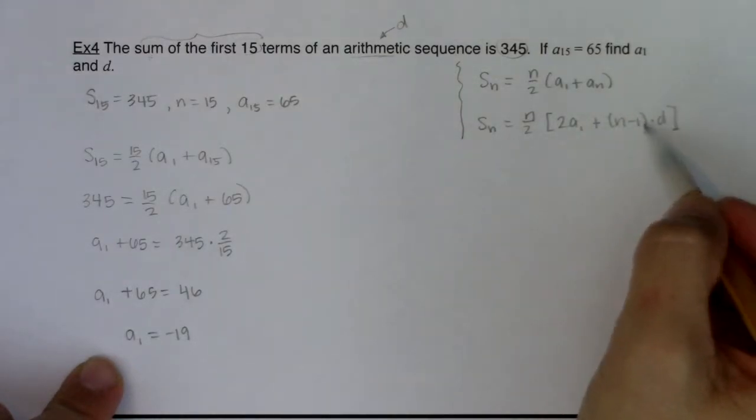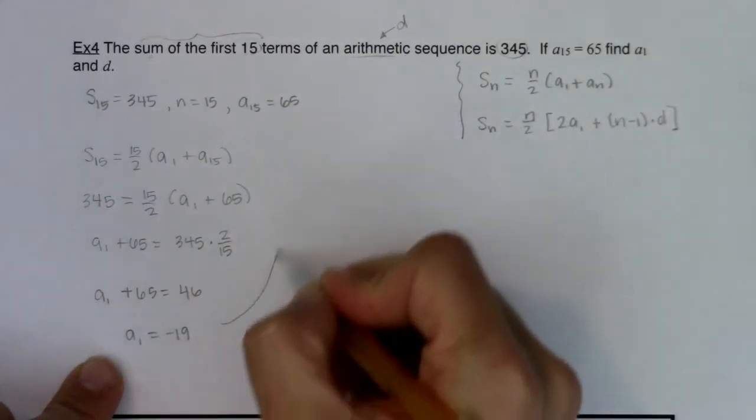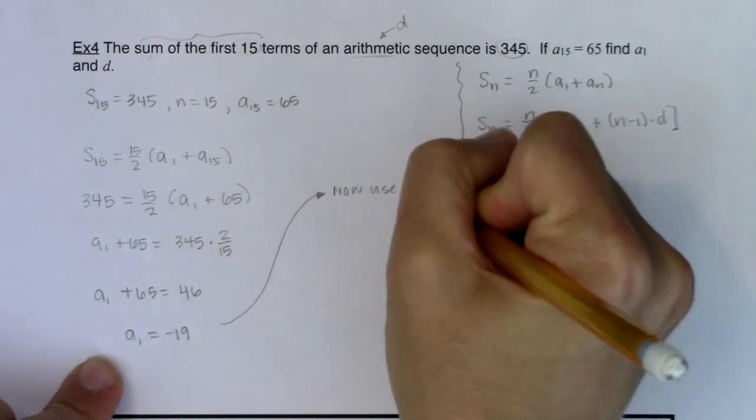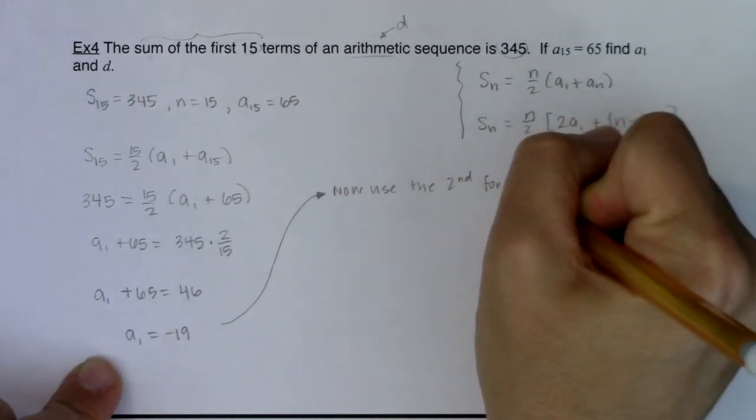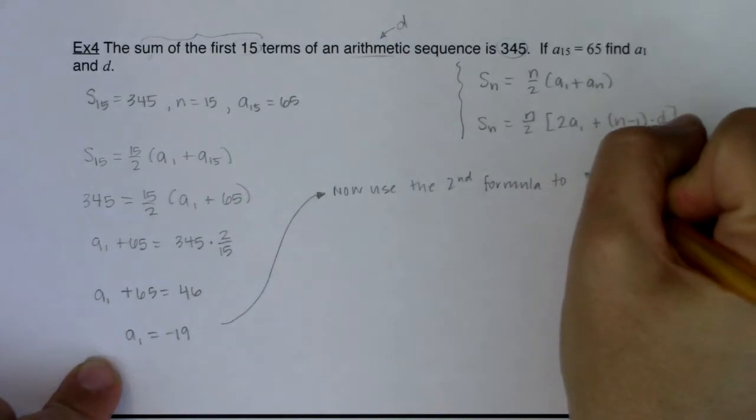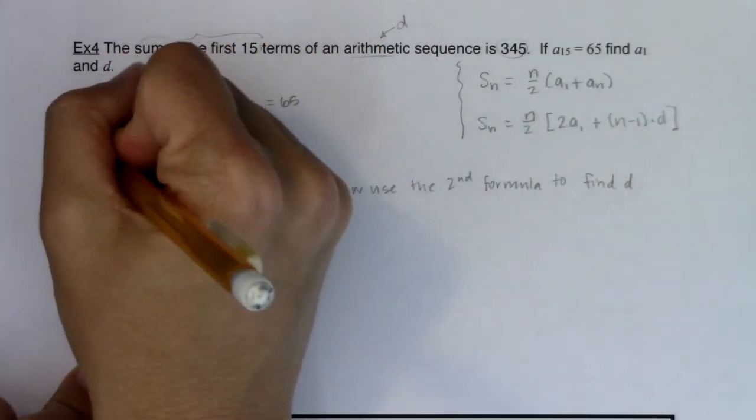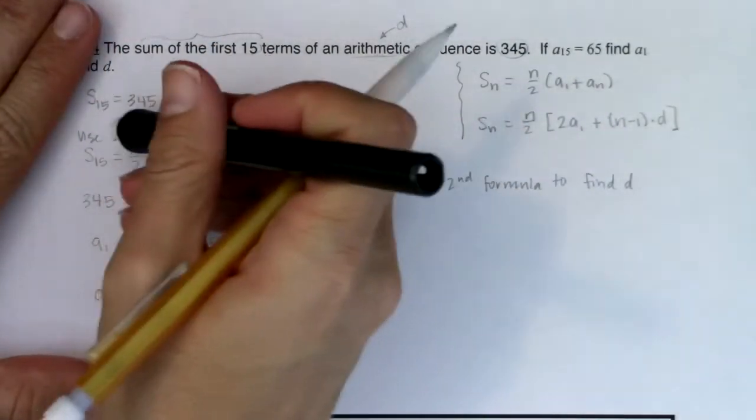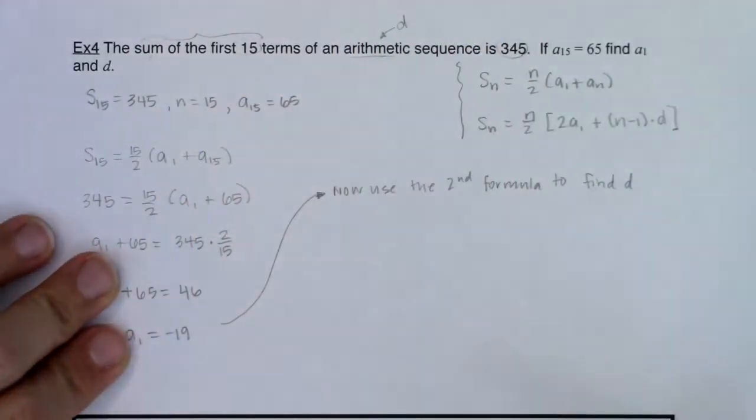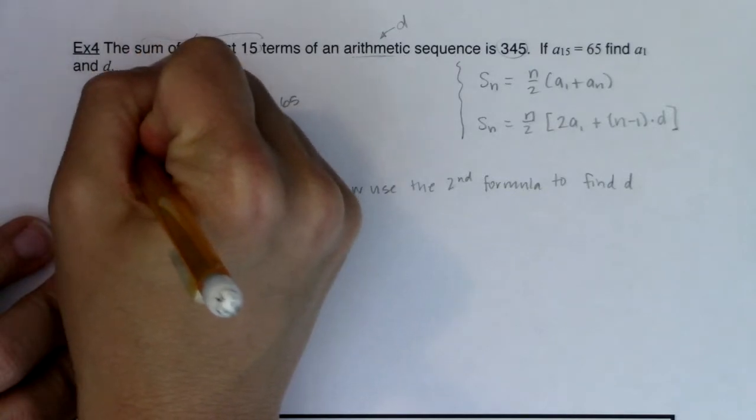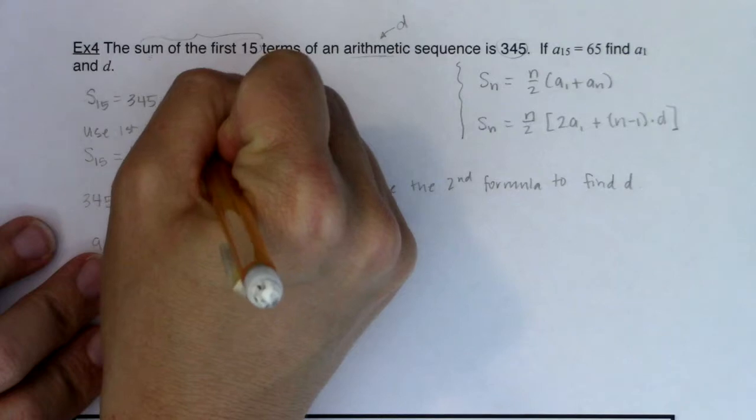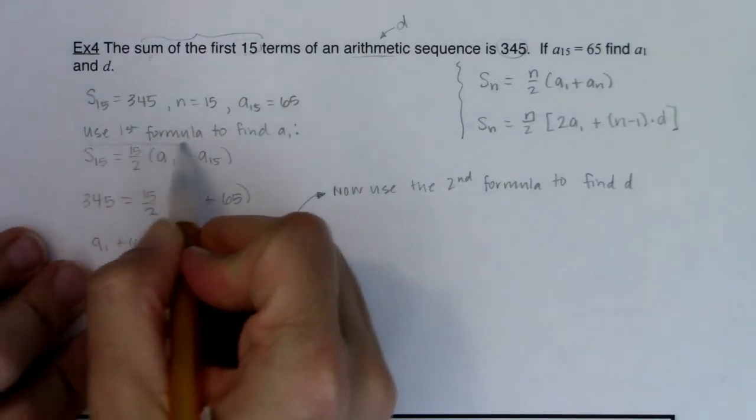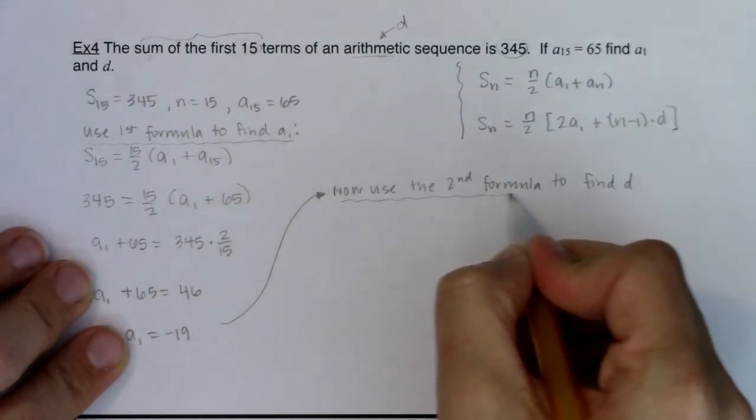The next thing they asked me to find was d, and d is hiding out in this second formula. So we're going to now use the second formula to find d. I will use the first formula, or I used the first formula to find a sub 1.